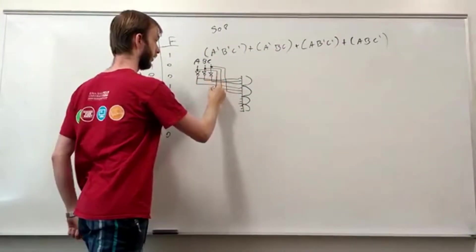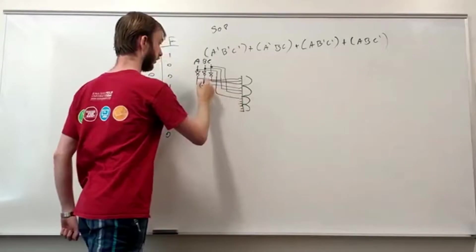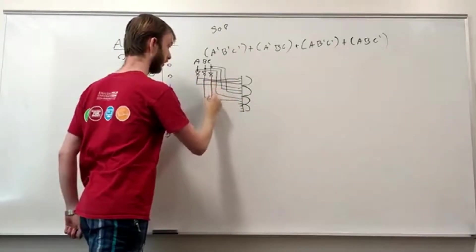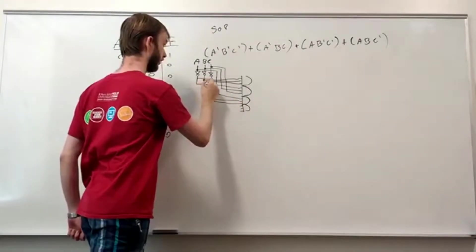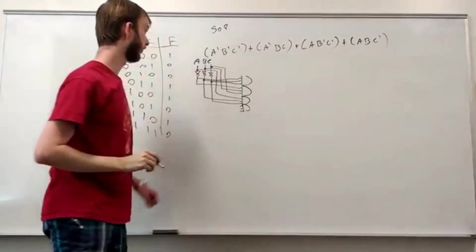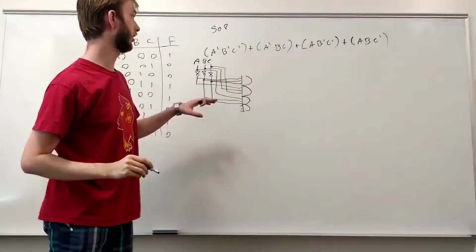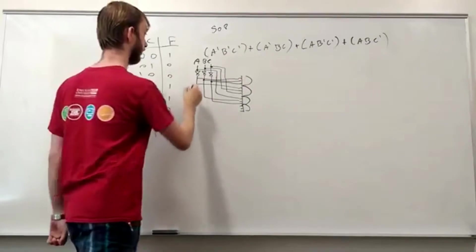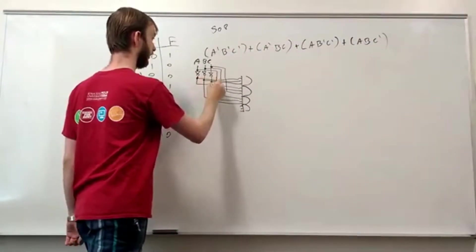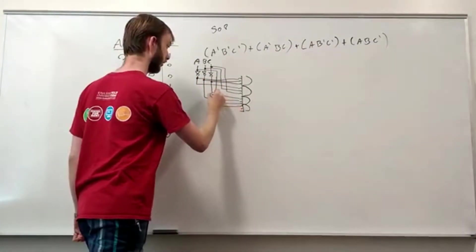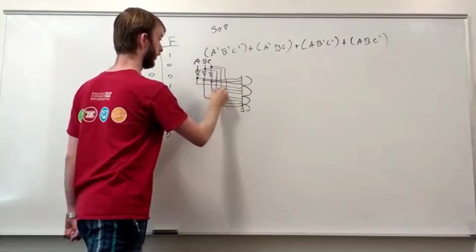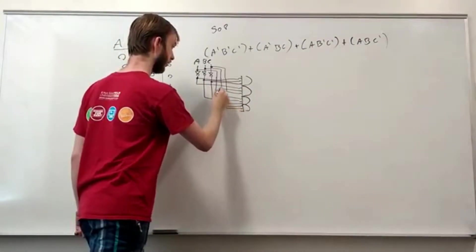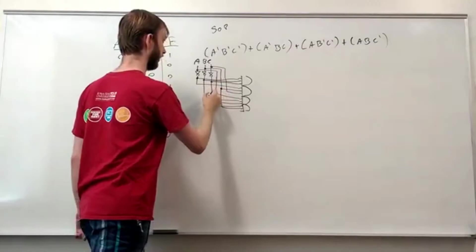So A not, B, C not. And then the final one is A, B, and C not.